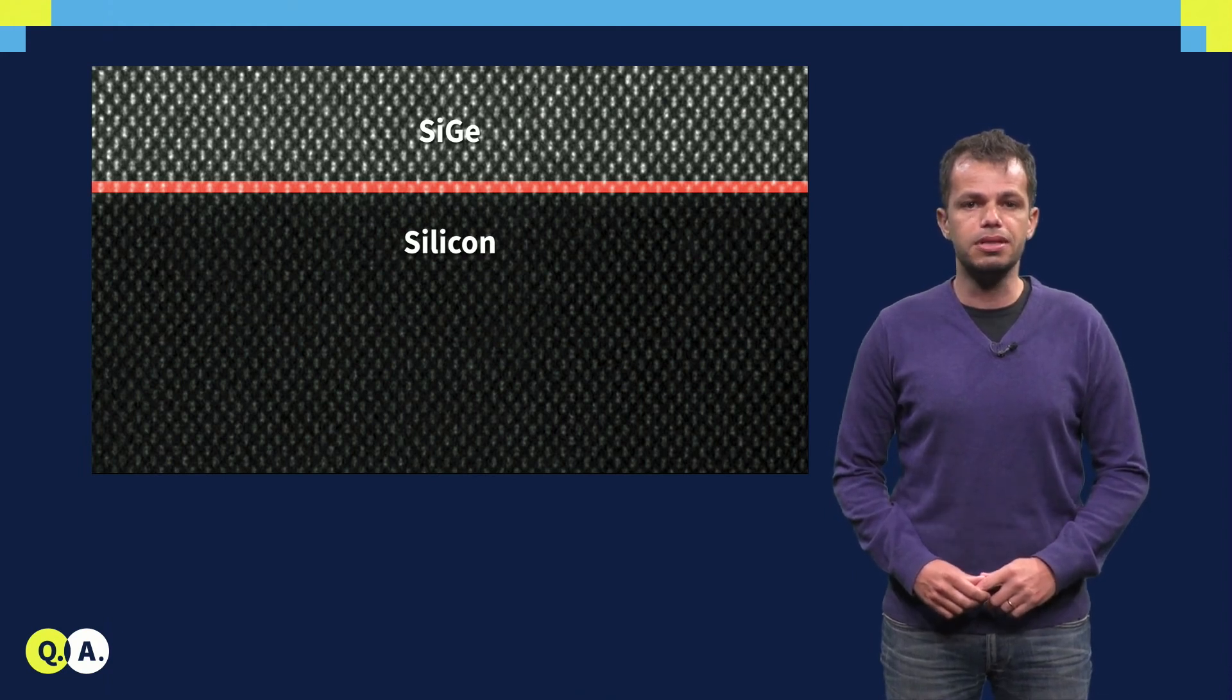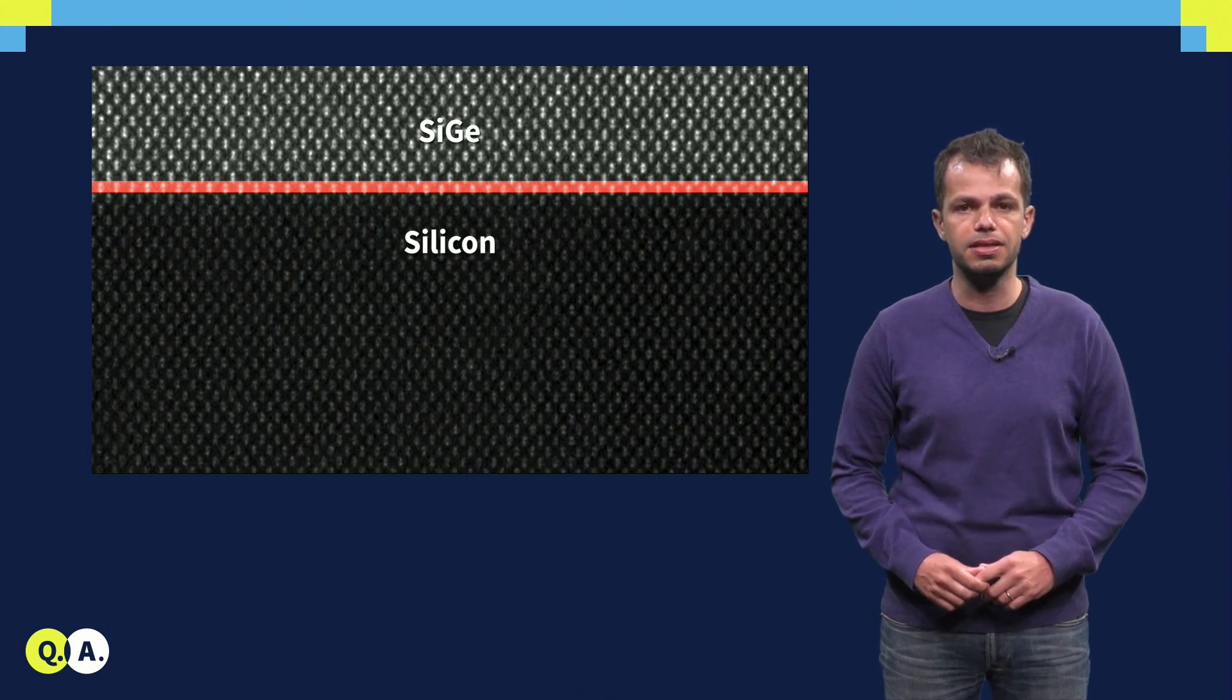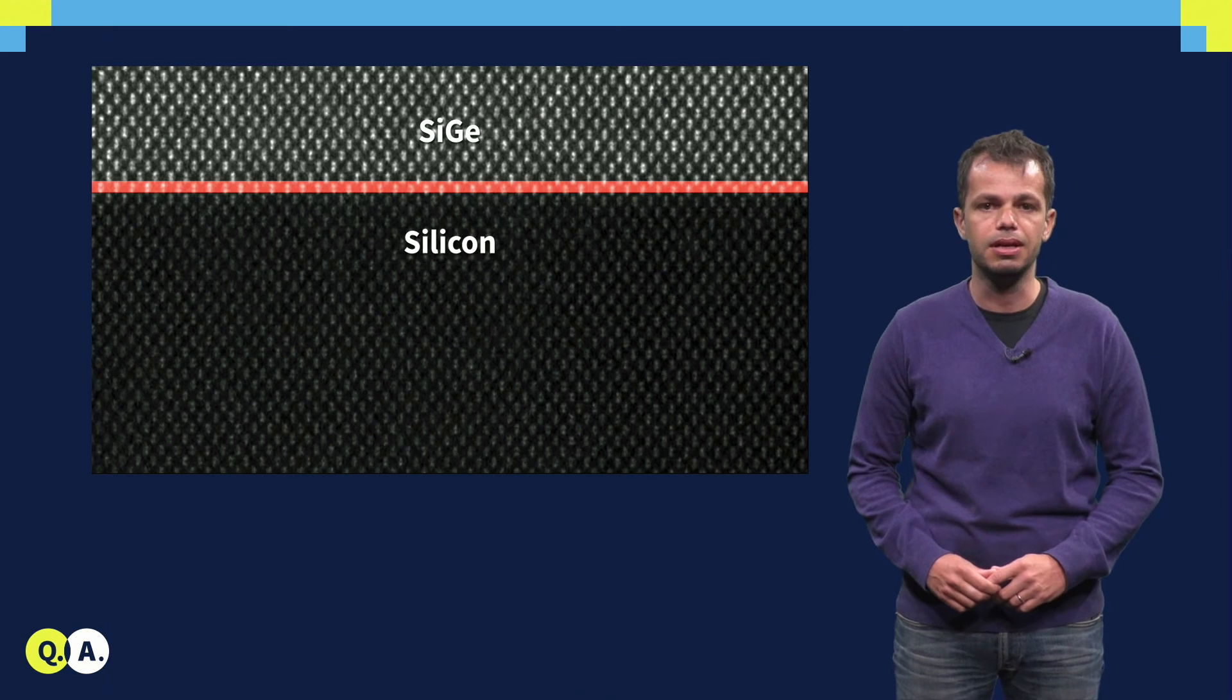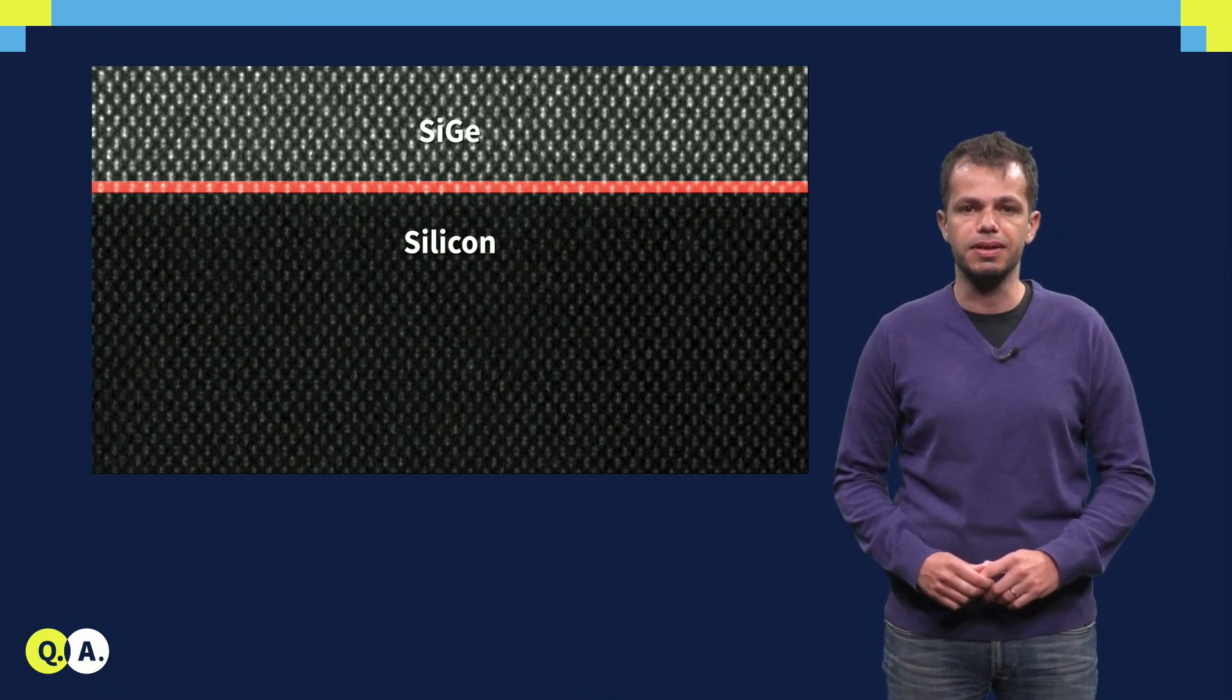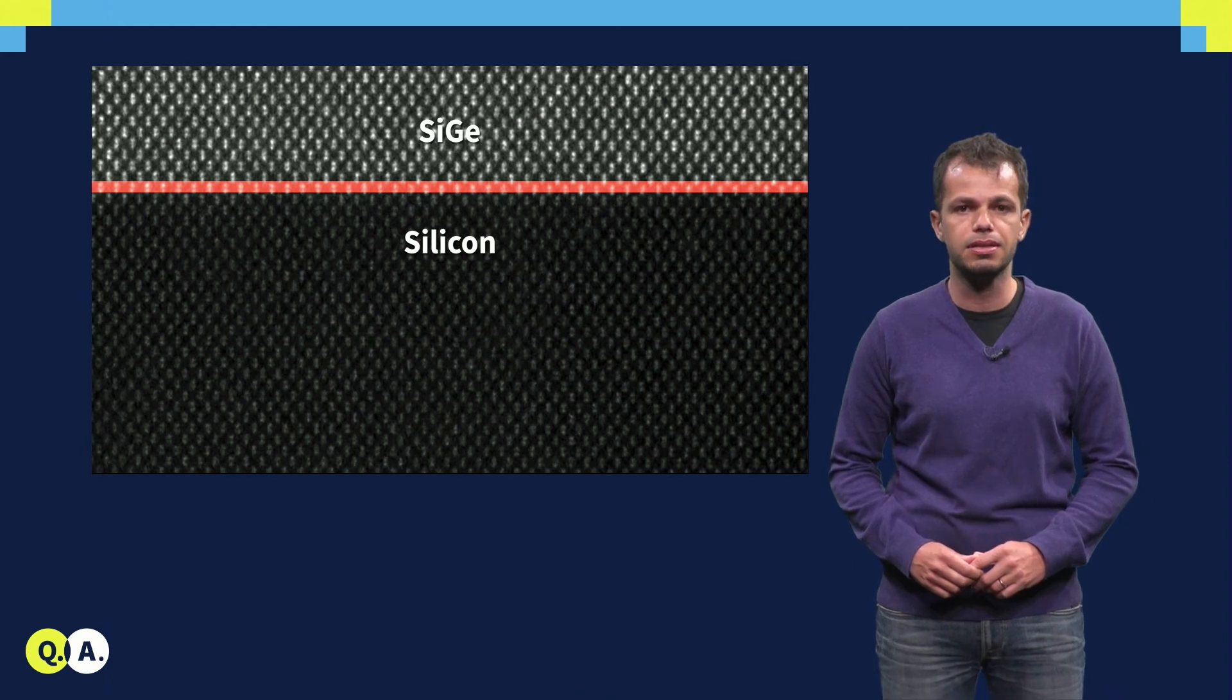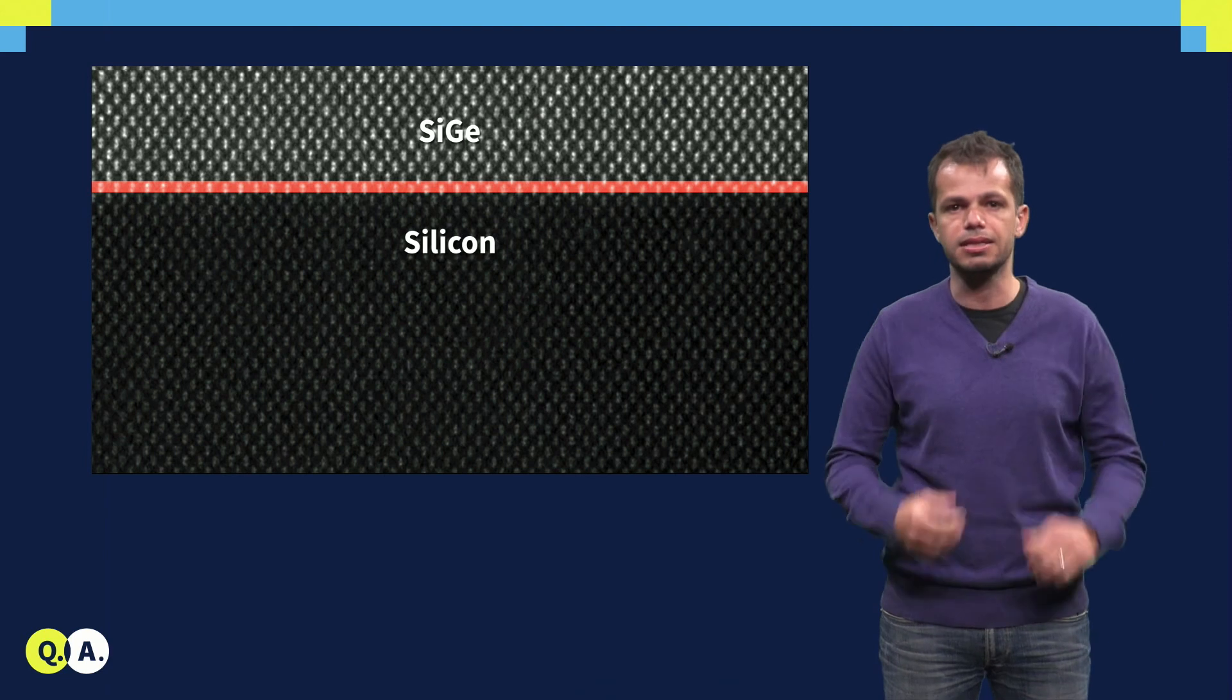For example, you see here the perfect atomic arrangement of silicon and germanium atoms in the critical interface between silicon and silicon germanium. The lattice spacing is exactly the same at both sides of the sharp interface, indicating that the CVD process successfully strained silicon to match the underlying silicon germanium.